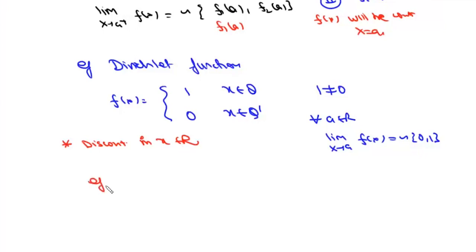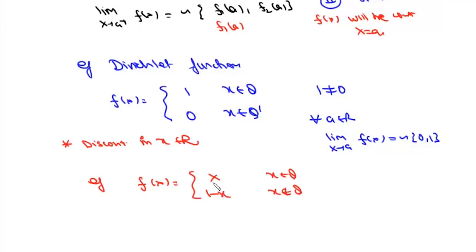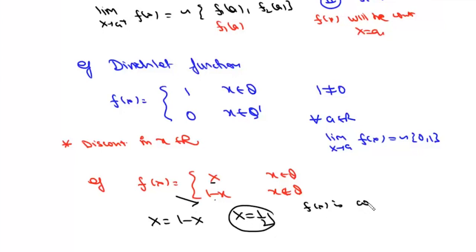Another example: suppose f(x) = x when x is rational and f(x) = 1 - x when x is irrational. We equate the two definitions to find the value of x: x = 1 - x, giving x = 1/2. So this function f(x) is continuous at x = 1/2, and for all other points — that is, for all x ∈ ℝ \ {1/2} — this function will be discontinuous.